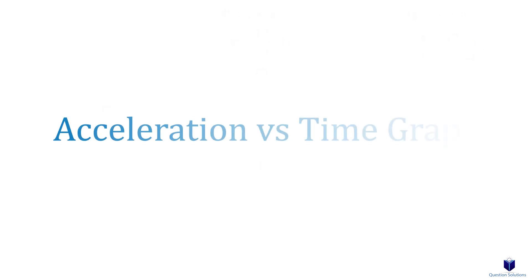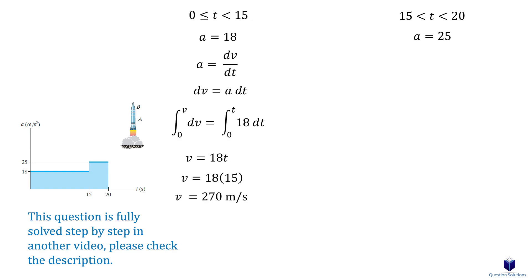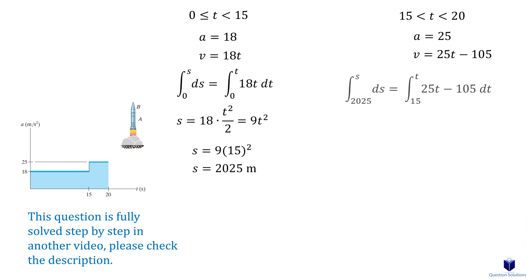The third type of graph is the acceleration versus time graph. First, write down the equations for each of the segments. If you need to find the velocity, remember that acceleration is dv over dt, which you can write as dv equals a dt. Then integrate, remembering to substitute the value at the time where the new segment starts as your new bounds for the next integral. Once you find the velocity equation and the question asks for the position, integrate the velocity equation again — so in essence, you take the integral of the acceleration equations two times.